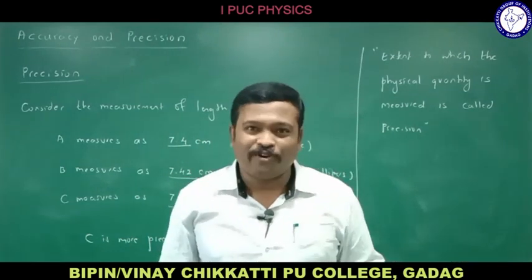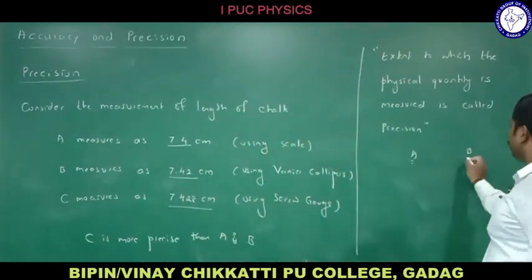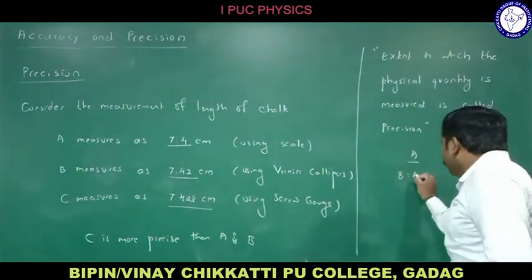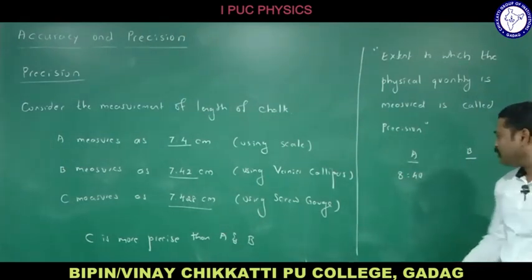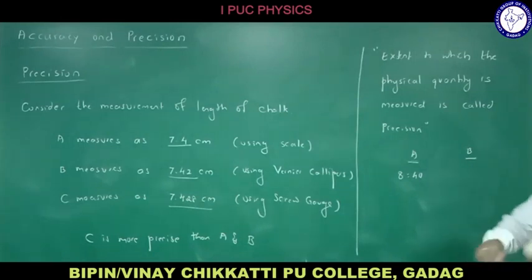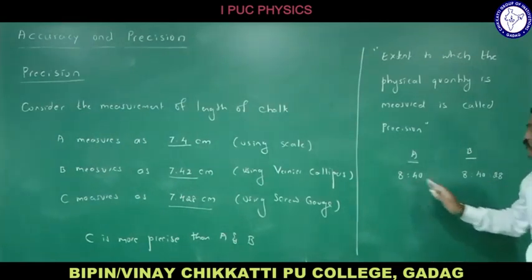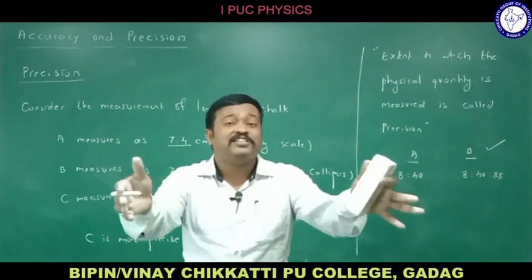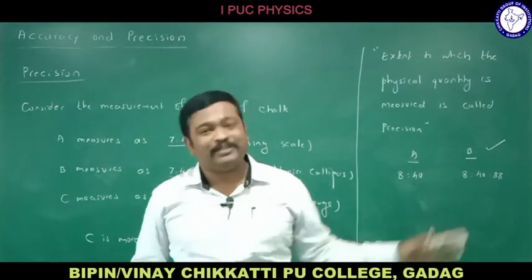For another example: student A says the time is 8:40, while student B, using a digital clock, says it is 8 hours, 40 minutes, 28 seconds. Student B is more precise because the extent to which the physical quantity (time) is measured is greater. That extent is what we call precision.